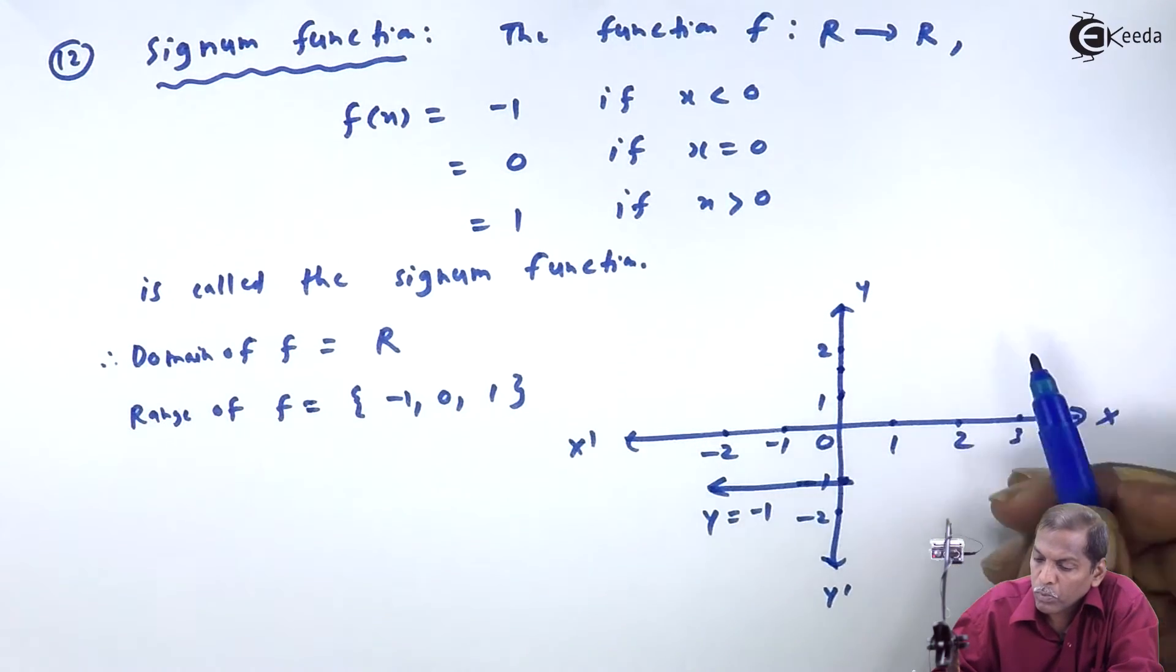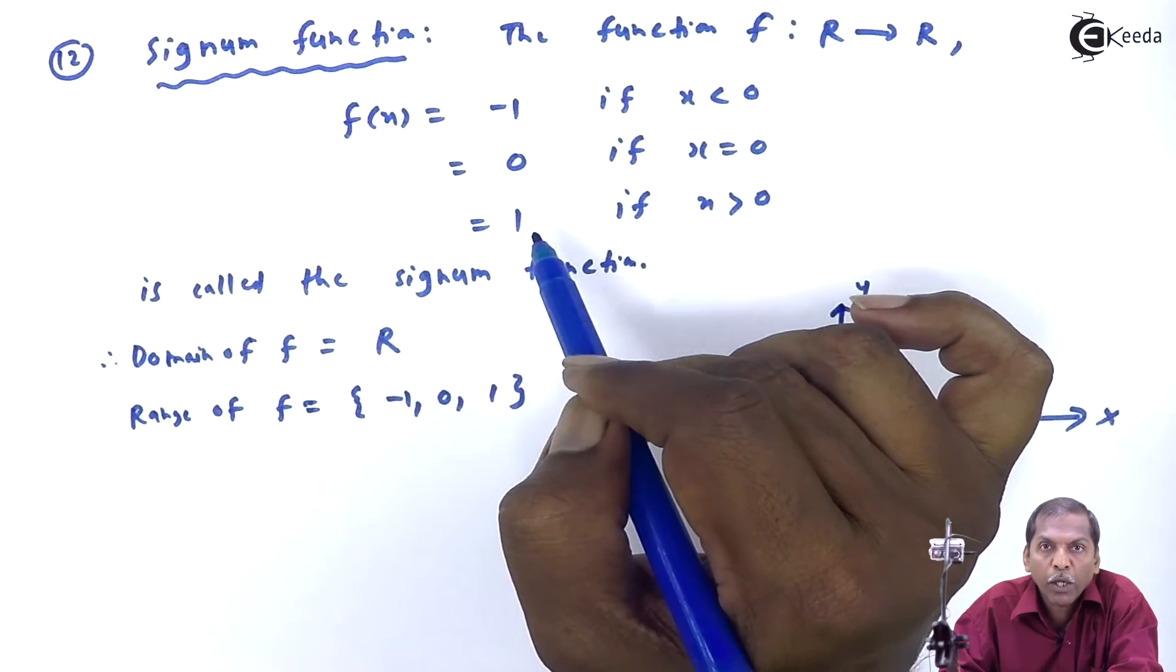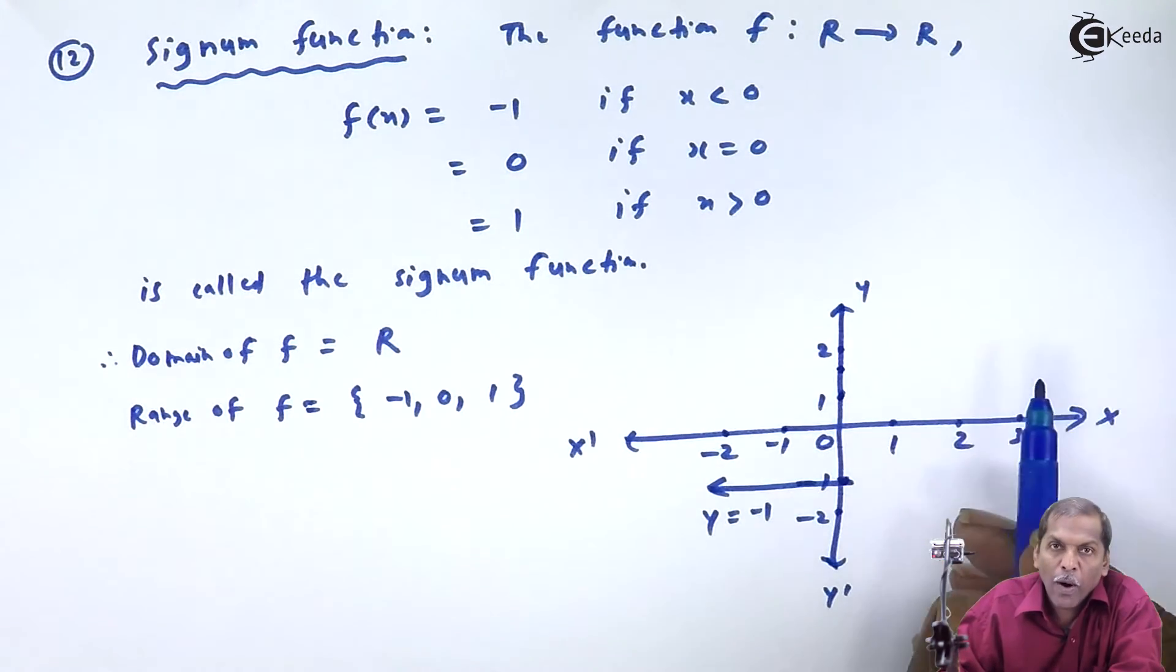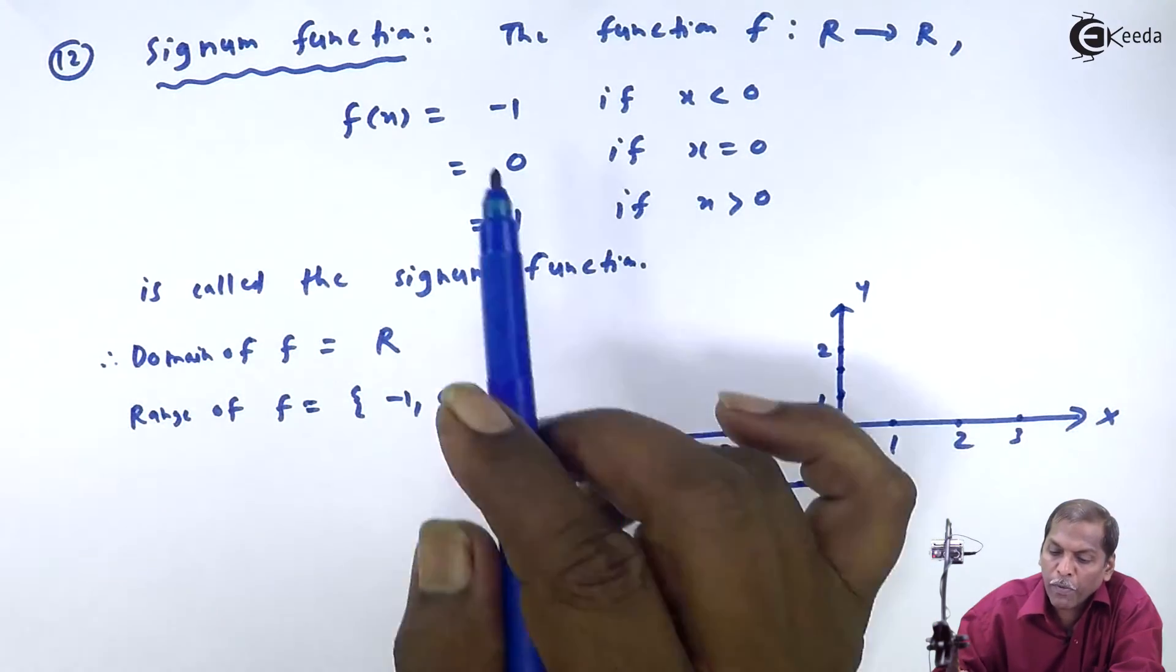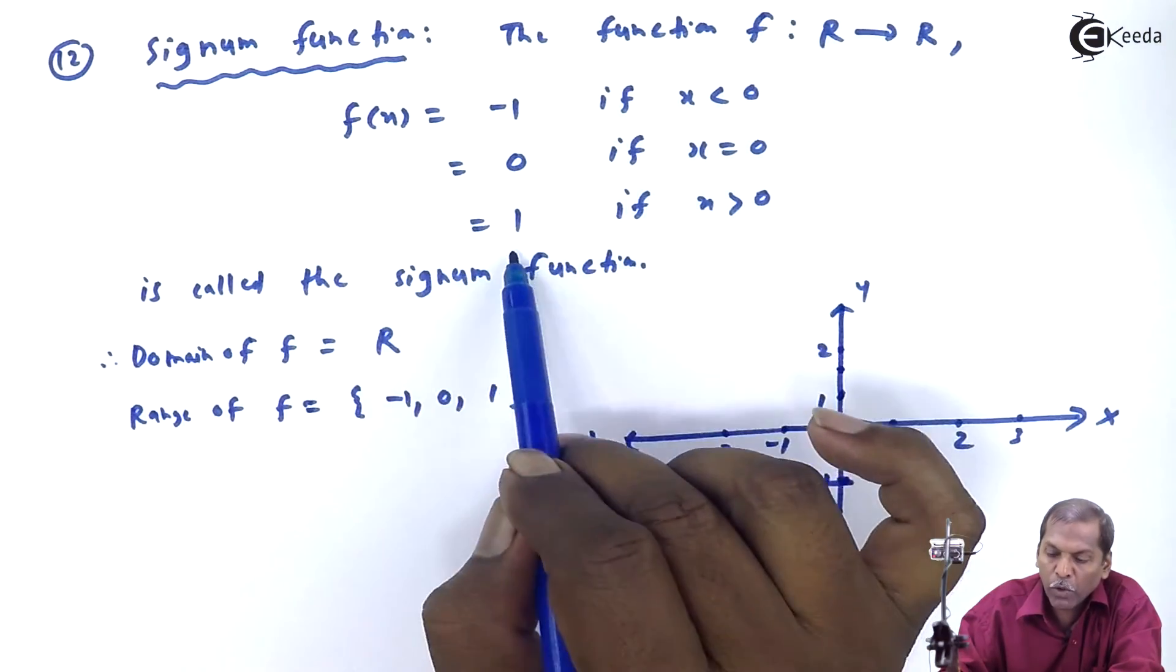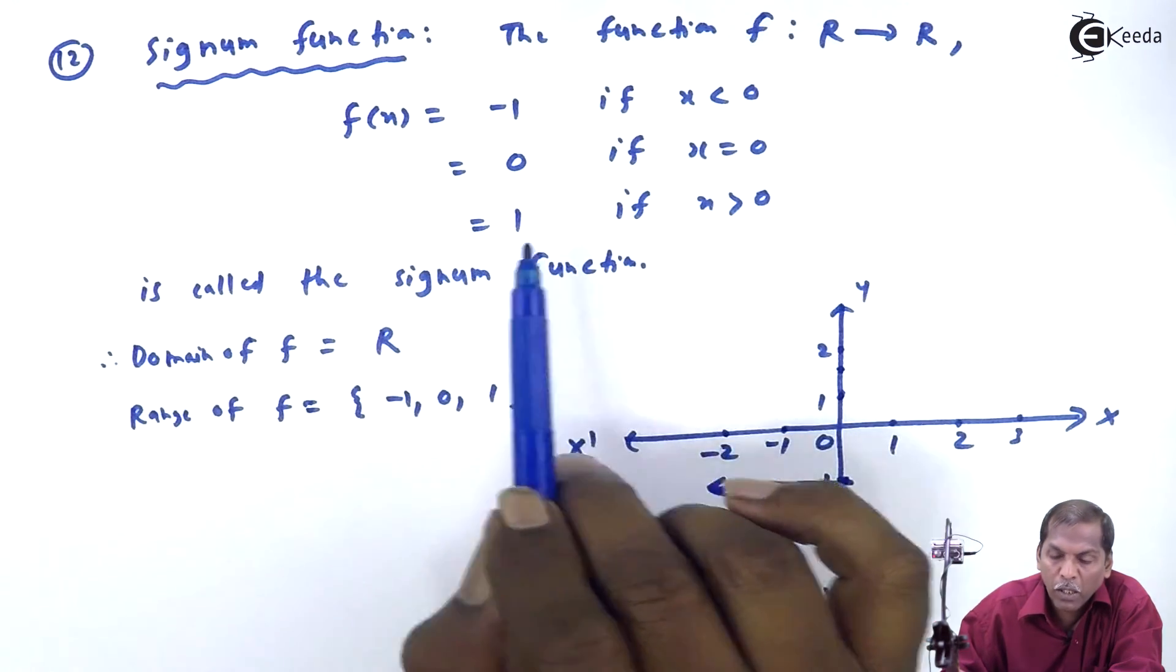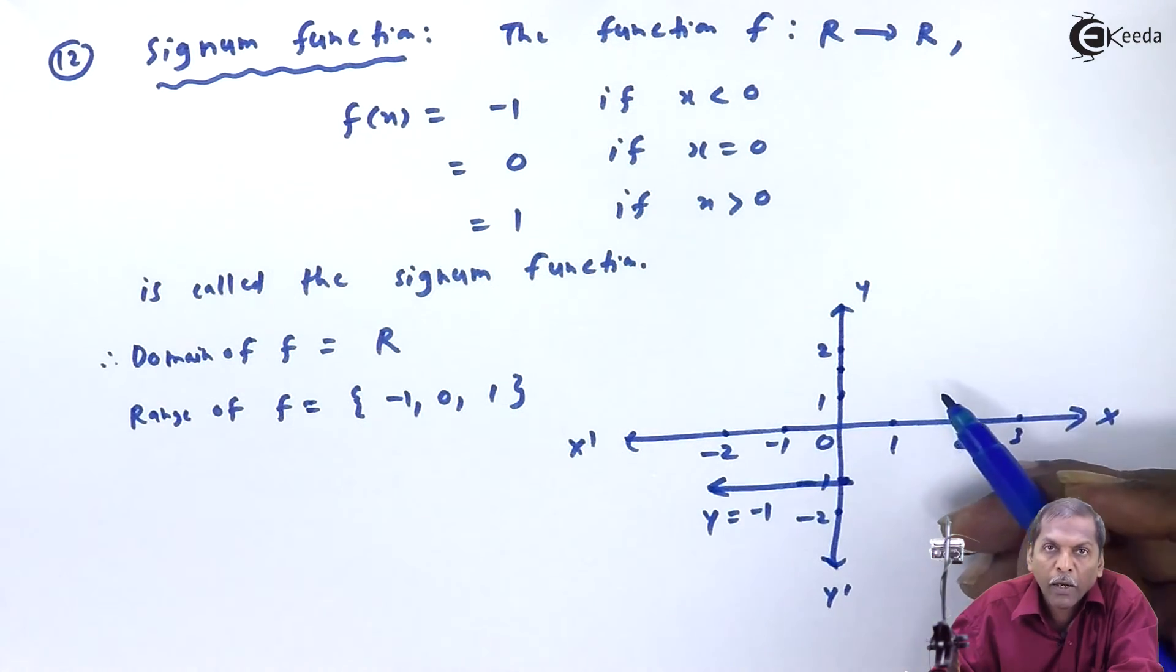Next, f(x) = 0, so that is y = 0, representing the x-axis itself. So this value here, f(x) = 1, that is y = 1, means a line parallel to the x-axis cutting y at the point 1.